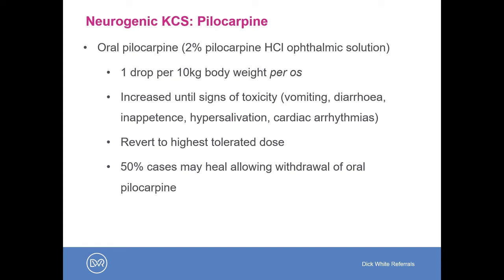Some ophthalmologists also advocate topical pilocarpine. Topical pilocarpine can be compounded in-house using hypromellose as an aqueous tear substitute base, at a concentration of 0.1 to 0.25%, and this is usually applied twice daily to the eye. In many cases which are refractory to treatment — and this applies not only to neurogenic dry eye but any cause of dry eye — parotid duct transposition needs to be considered.